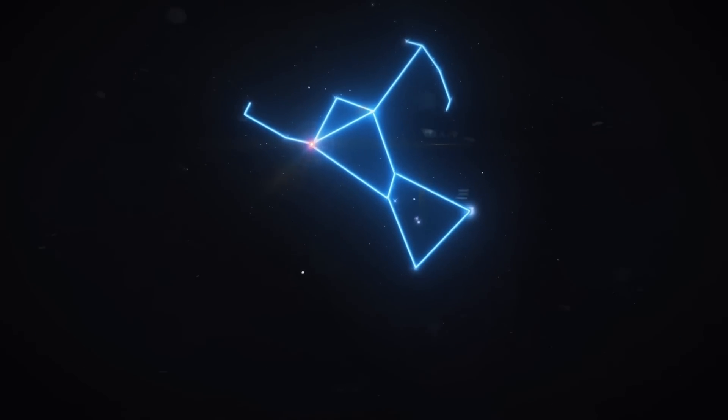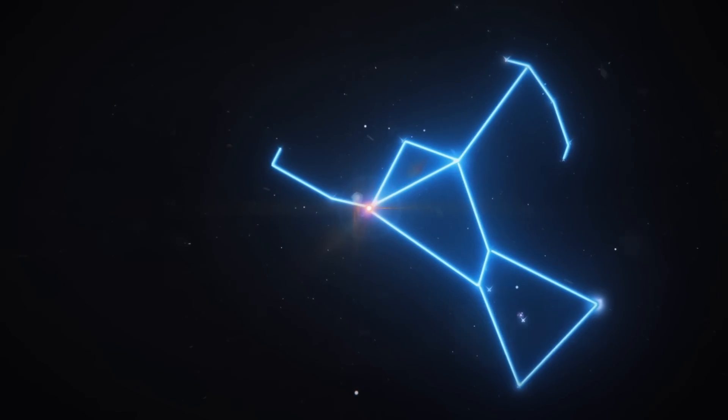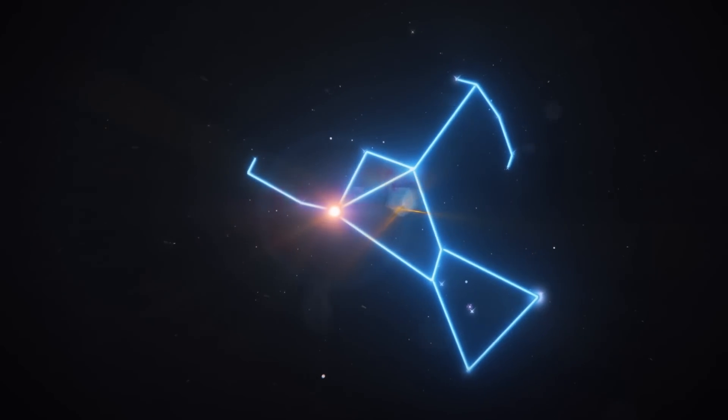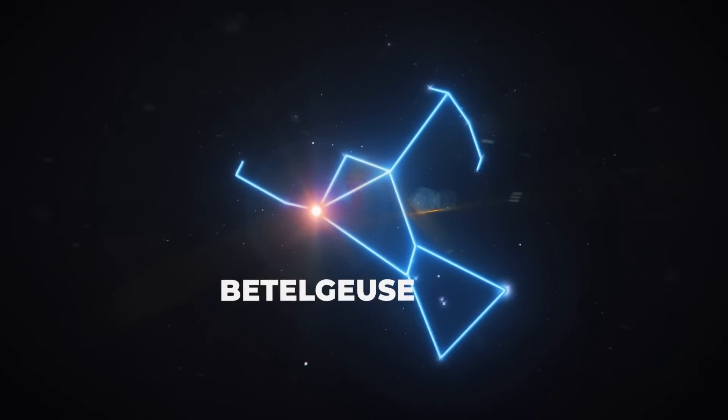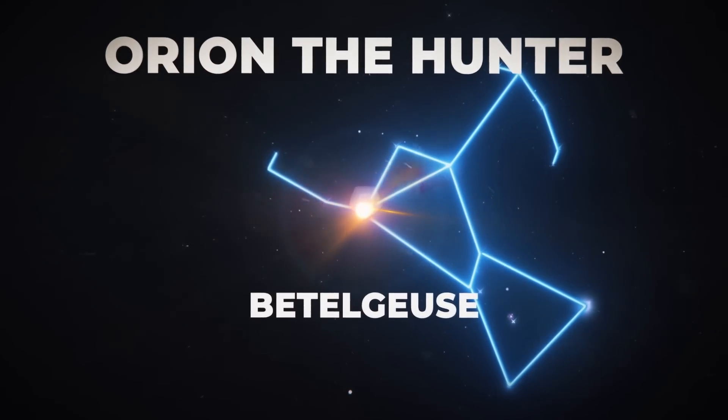One such star is Betelgeuse, which is among the largest and brightest stars in our night sky. The brilliant, ruby-red glittering star known as Betelgeuse is located in the upper right shoulder of the winter constellation Orion the Hunter.